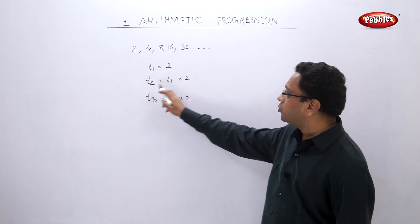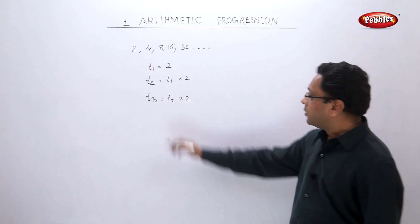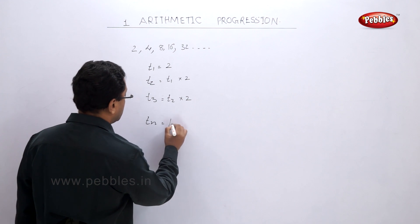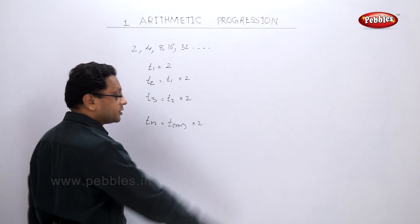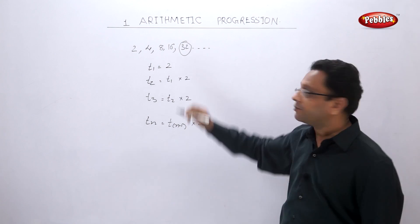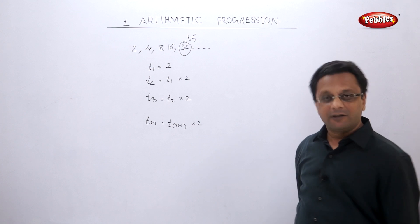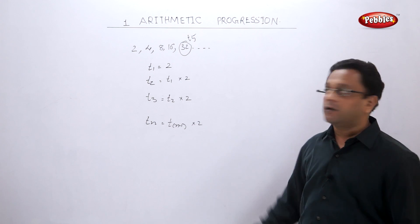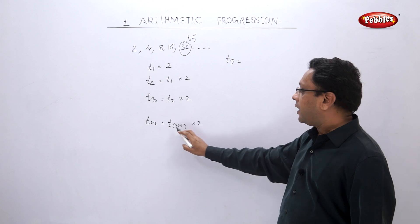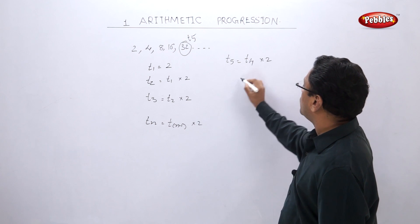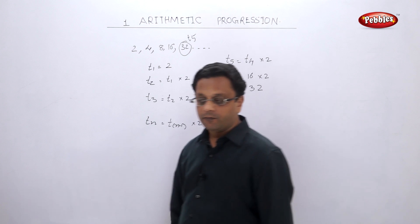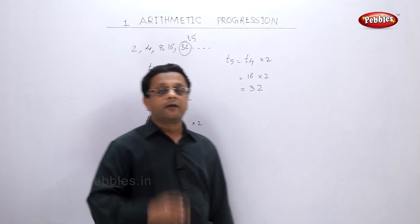What will be TN? One number before TN is TN-1, so TN equals TN-1 multiplied by 2. If we want to find T5, with N equal to 5, N-1 is 4: T5 equals T4 into 2. T4 is 16, so T5 equals 32 — which matches the given sequence. In this way you can find any term of a particular sequence, and similarly you can find the sum of the first 5, 10, or 20 numbers.